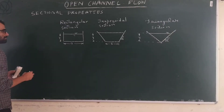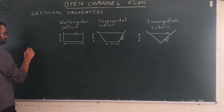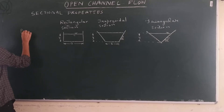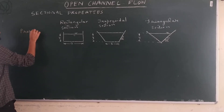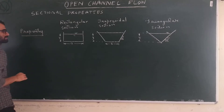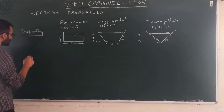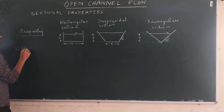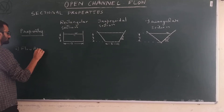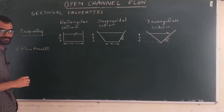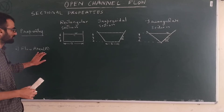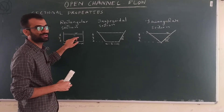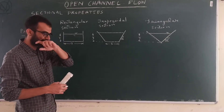The first sectional property we will look at is flow area, denoted by capital A. Flow area is the cross-sectional area of the flow normal to the direction of flow.